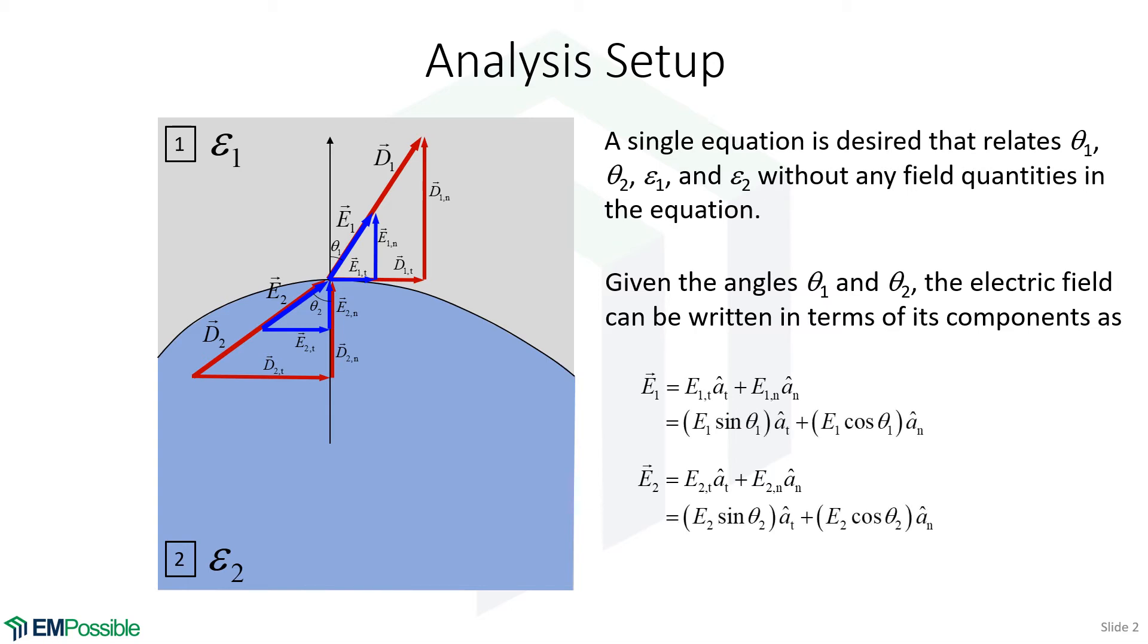From there, using the angles, we can look and say the tangential component of E1 is the magnitude E1 times the sine of the angle, theta one. Likewise, the normal component of E1 is the magnitude of E1 times the cosine of the angle, theta one.